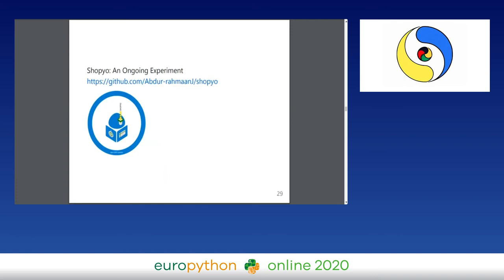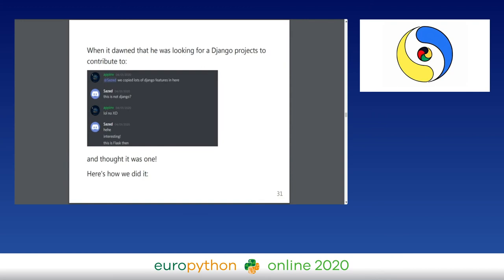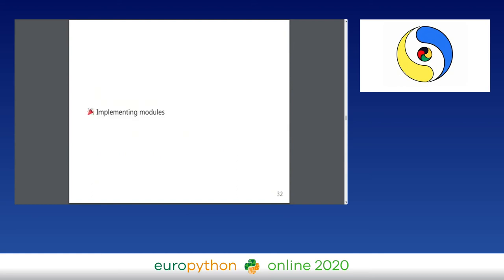You might wonder whether this is truly a convincing Django clone. I was talking to someone on our Discord; when I said we copied lots of Django features, he was surprised and said 'oh, really — it's not Django?' I confirmed it's Flask and explained the different features we copied, and he was amazed.